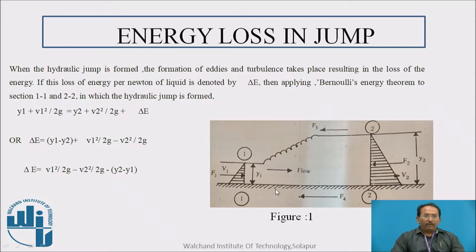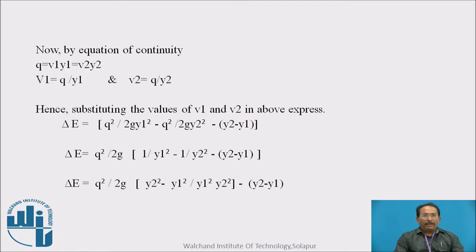Y1 plus v1 square upon 2g is equal to y2 plus v2 square upon 2g plus loss that is delta E. If you can further simplify, you will get delta E is equal to q square upon 2g y1 square minus q square upon 2g y2 square minus into bracket y2 minus y1. Here q we got from v1 into y1. This q is nothing but a discharge per meter width. That is why area is y1 into 1.